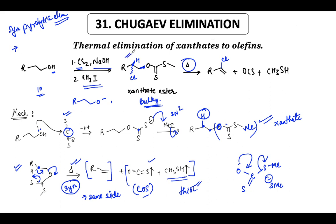In a free acyclic molecule there can be rotation, so stereochemistry is less of a concern there. We will see some cyclic molecules where syn elimination really matters. Also important to remember: in Chugaev elimination, you always get the Hoffmann product — the less substituted alkene — because of the bulky xanthate ester that is formed. Pyrolytic eliminations always prefer the less substituted alkene.